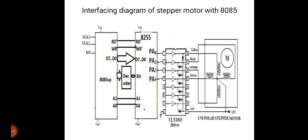This is the interfacing diagram of 8085 with the stepper motor. Here we have the 8085 microprocessor, then the 8255 programmable peripheral interface — we are interfacing the stepper motor using 8255 — then the ULN driver, and this is the unipolar stepper motor.